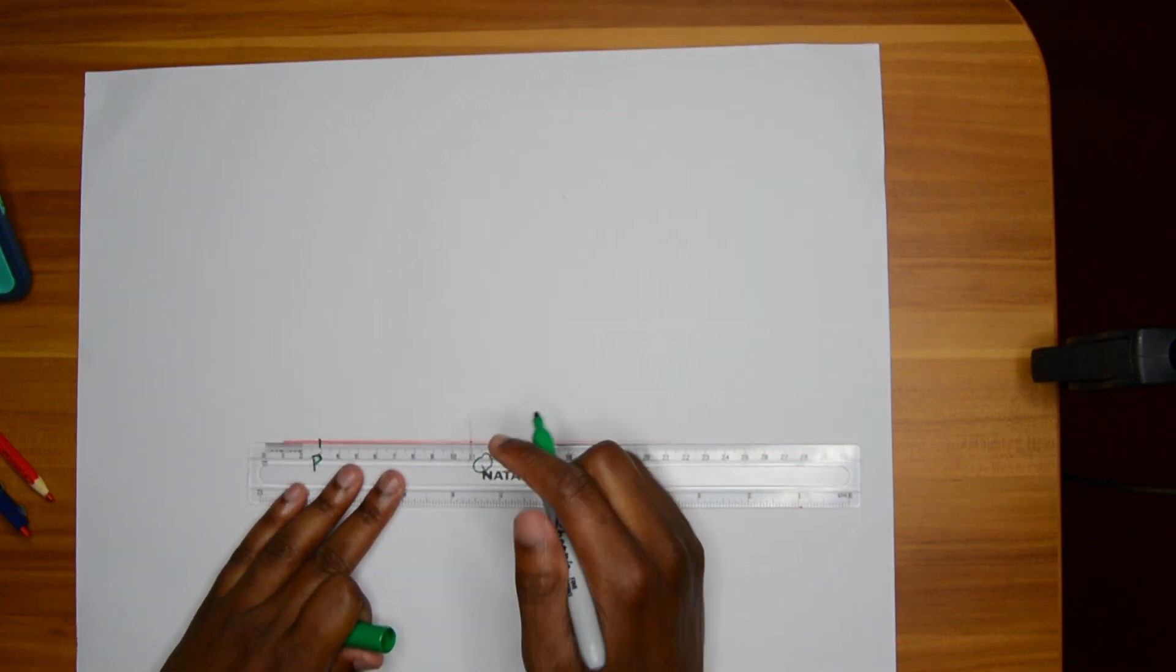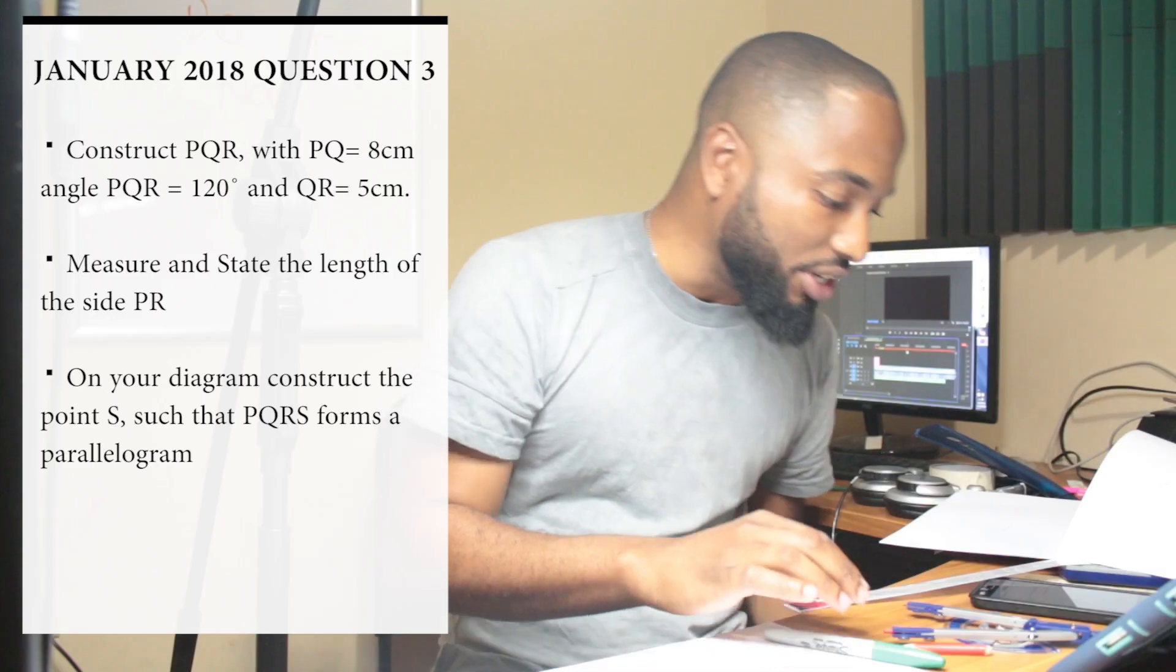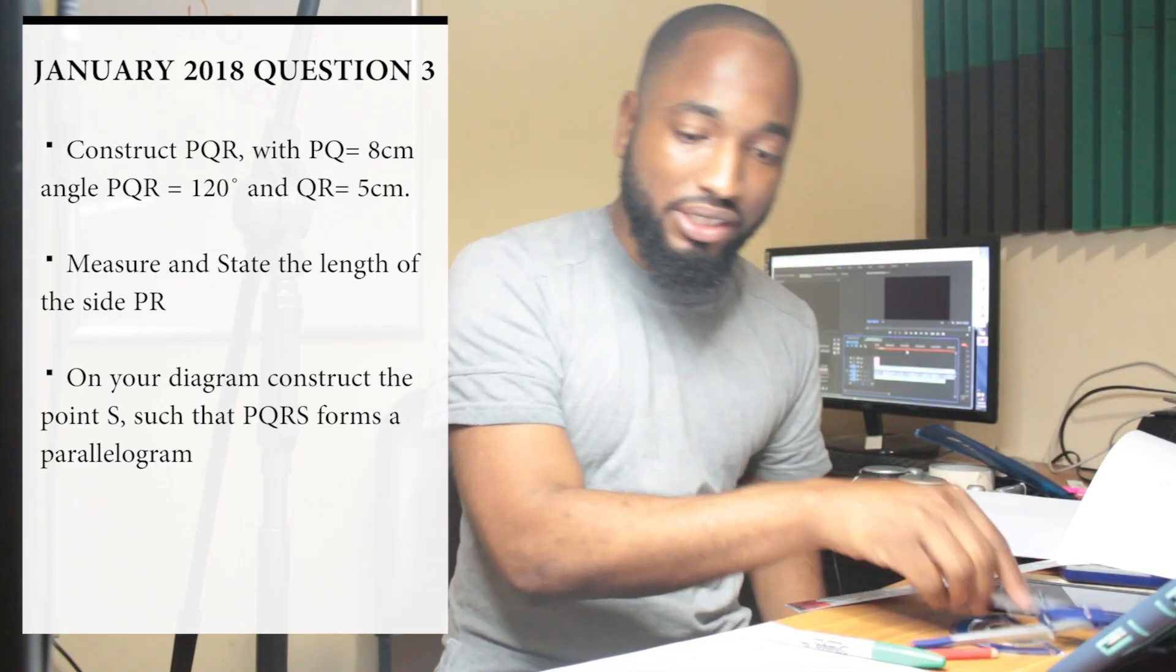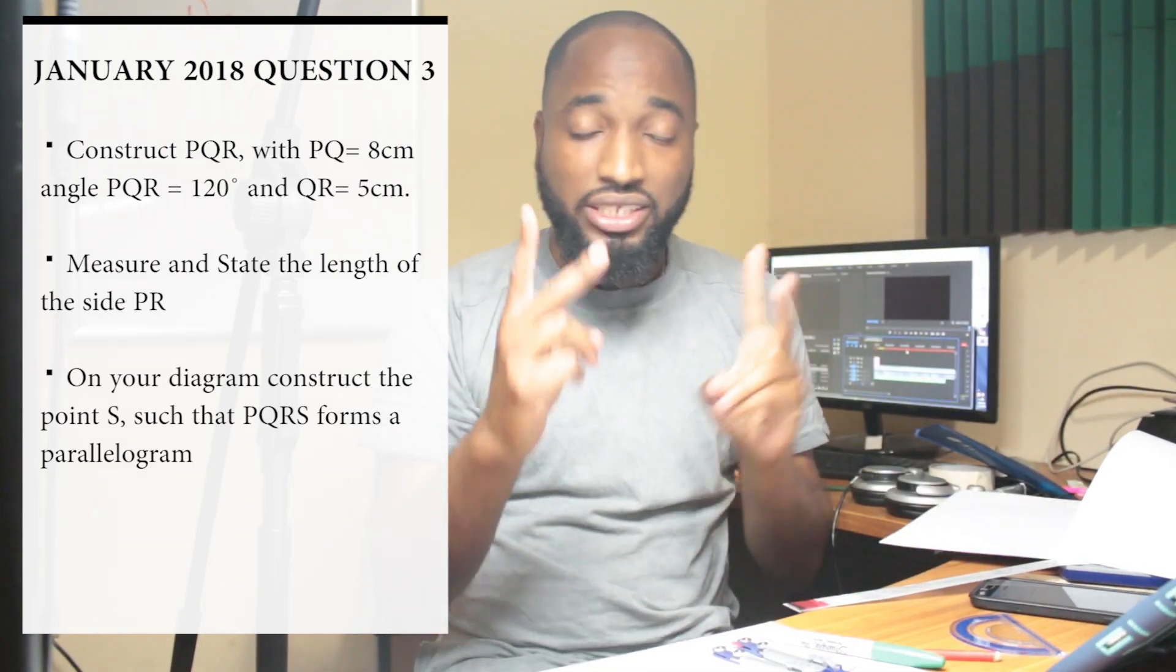That's PQ. All you need now is QR going up 5 cm. So what we're going to need is 120 degrees going this way. Now there are two ways to construct 120.